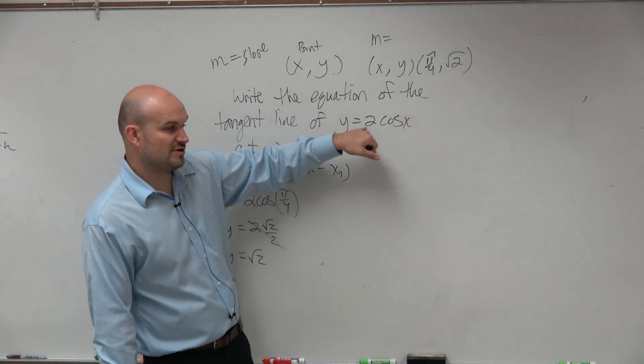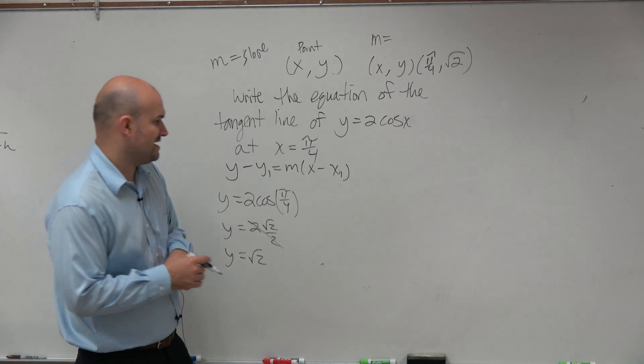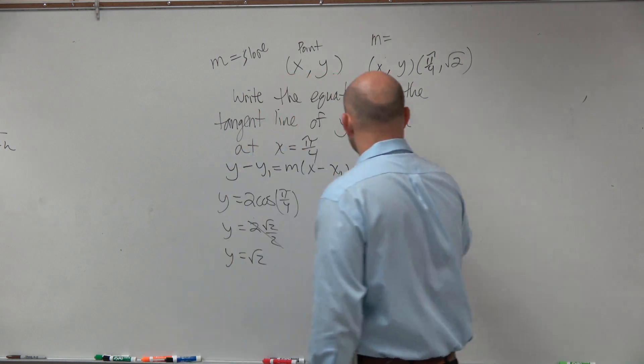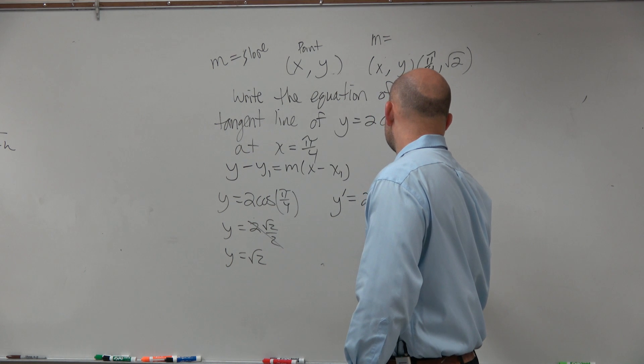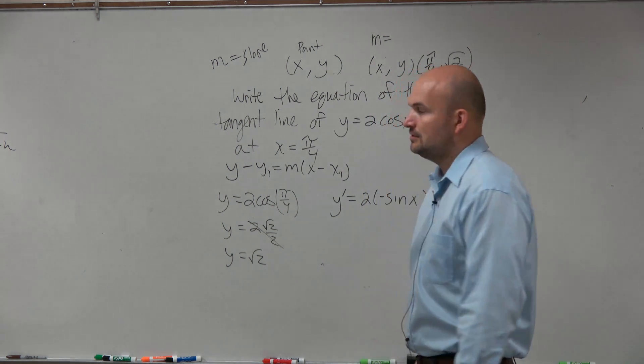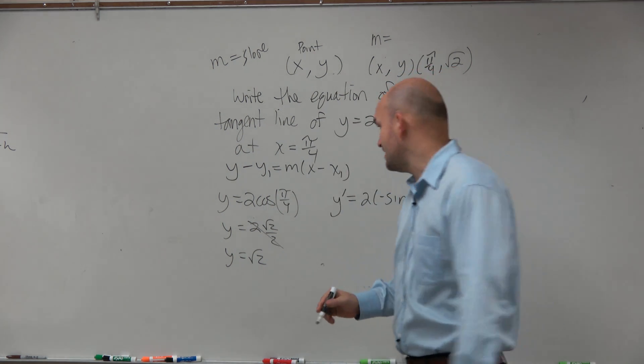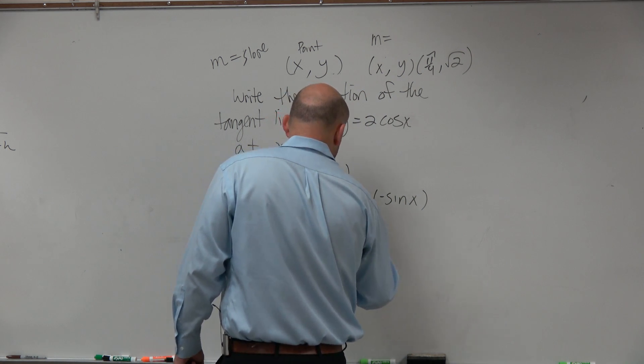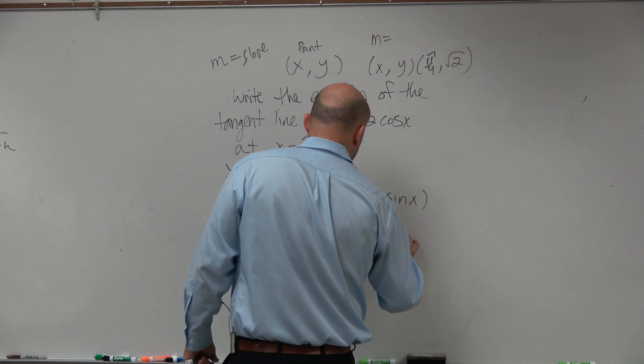So here we need to find the derivative of y equals 2 cosine of x. So I'm going to say y prime is basically just going to be 2 negative sine of x, right? Because the derivative of cosine of x is negative sine of x. So in reality, this is equal to y prime equals negative 2 sine of x.